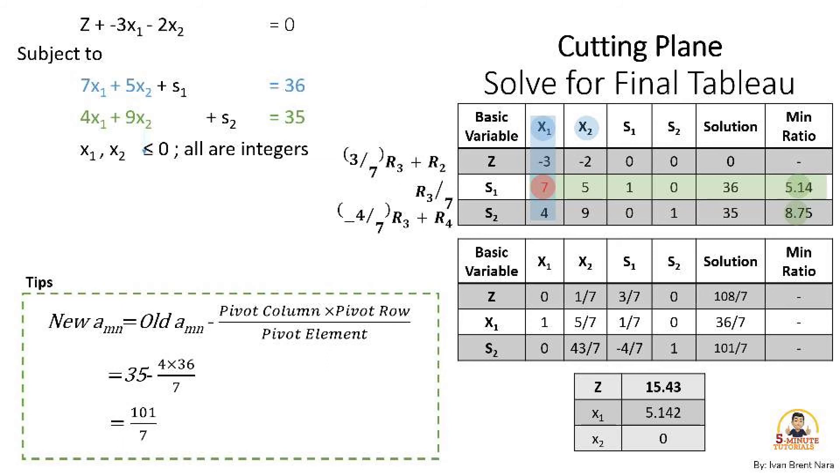It's 35 minus pivot column 4 times pivot row 36 divided by 7 which is equal to 101/7.